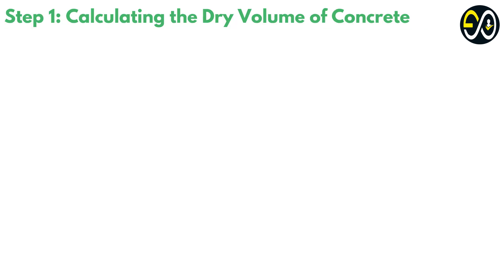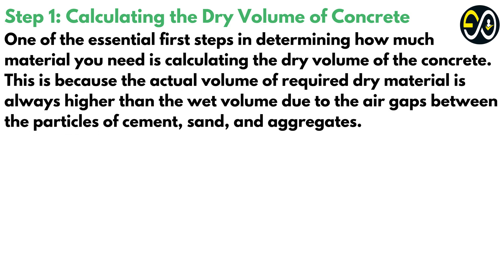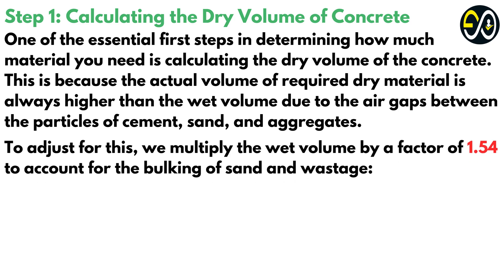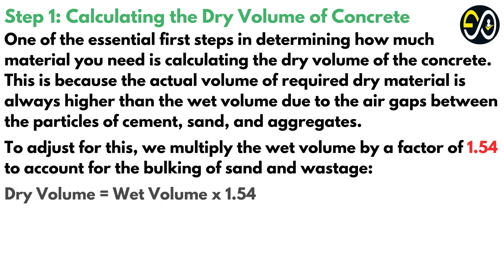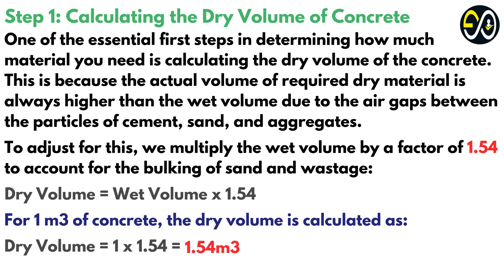Step one: calculating the dry volume of concrete. One of the essential first steps in determining how much material you need is calculating the dry volume of the concrete. This is because the actual volume of required dry material is always higher than the wet volume due to the air gaps between the particles of cement, sand and aggregates. To adjust for this, we multiply the wet volume by a factor of 1.54 to account for the bulking of sand and wastage. Dry volume equals wet volume times 1.54. For 1 cubic metre, the dry volume is calculated as: dry volume equals 1 × 1.54 equals 1.54 cubic metres.